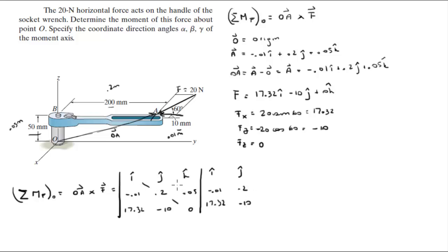You do your positive diagonals, positive, positive, positive. So your positive diagonals are, 0.2 times 0 times i is 0. J times 0.05 times 17.32 is 0.866j. And 0.01 times 10, they're both negative, so it becomes a positive, is plus 0.1k.